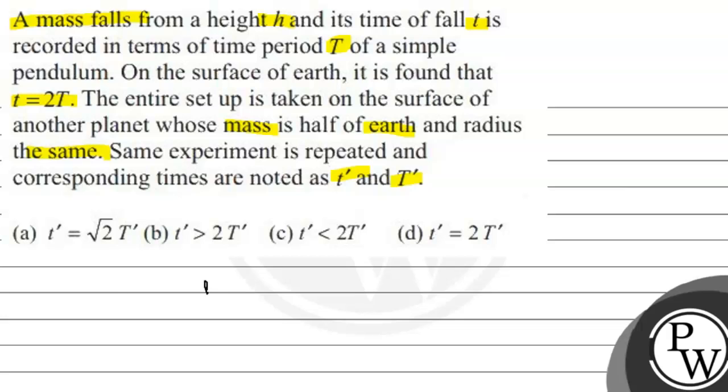The question is asking what is the relationship between small t and capital T. The time of fall when a mass is released from height h, and how much time it takes, is t. And capital T is the time period of a simple pendulum.